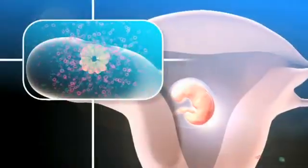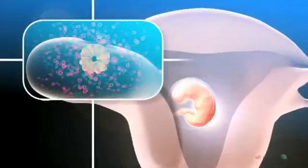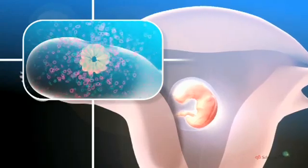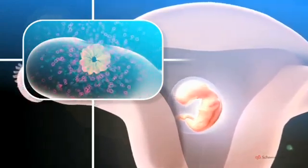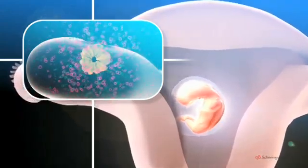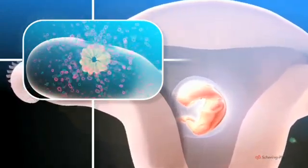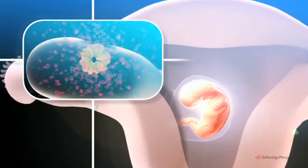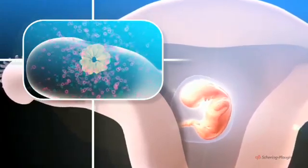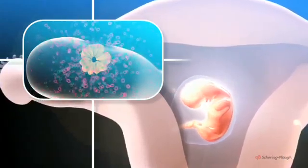But if the egg is fertilised, no menstruation occurs as the corpus luteum continues to function, secreting progesterone during the first three months of the pregnancy.